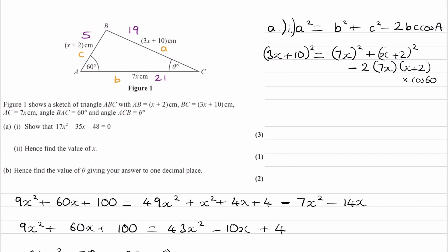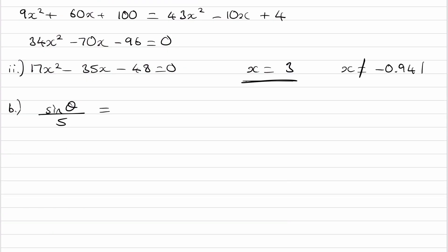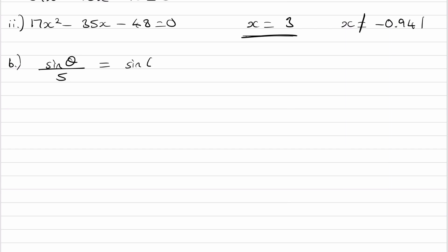And now we can use this angle and this side. Sine 60 over 19. Rearrange. So that will be 5 sine 60 over 19. This gives 5 root 3, all over 38.